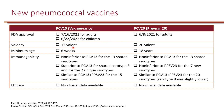PCV15 has 15 serotypes and has shown non-inferiority in immunogenicity compared to PCV13. All 13 serotypes in PCV13 are included in PCV15, plus two additional serotypes. PCV15 has been shown to be superior to PCV13 for those two unique serotypes, and interestingly also had a better response for serotype 3, which is also in PCV13. Since these are new, clinical outcome data on preventing invasive and non-invasive pneumococcal disease are not yet available.